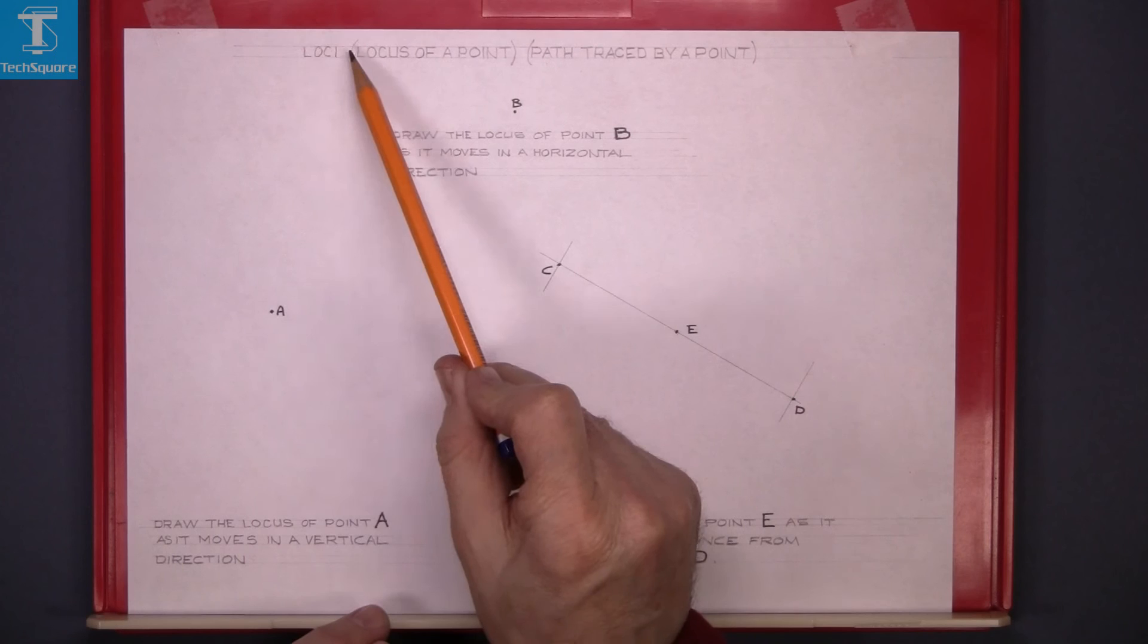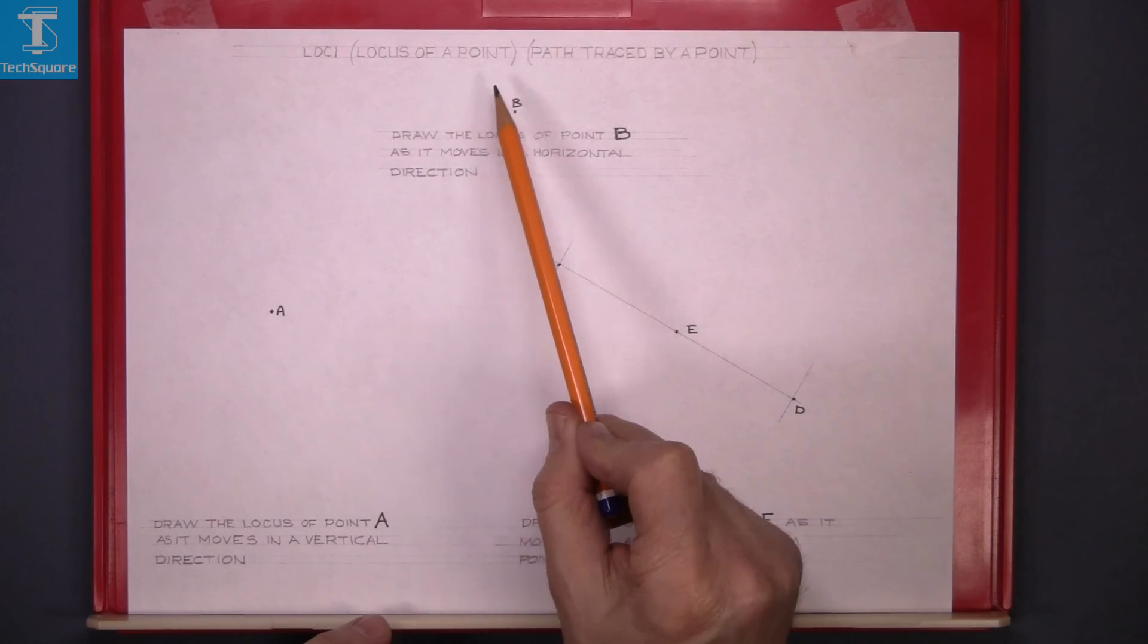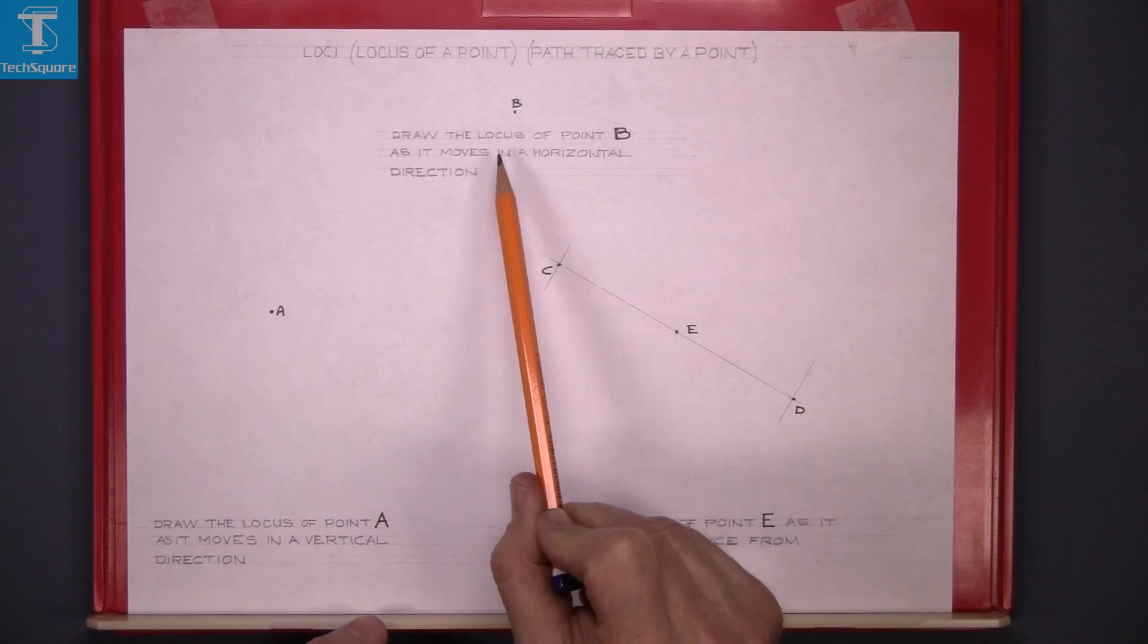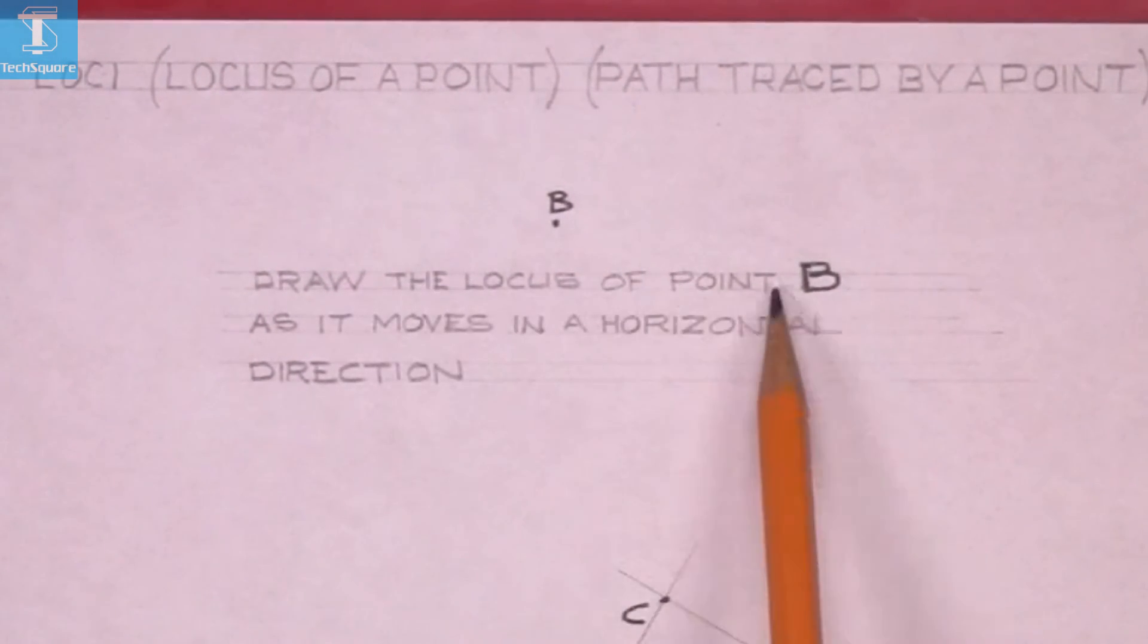This next topic is loci, which means the locus of a point or the path traced by a point. This is the first question here: draw the locus of point B, this is B here, as it moves in a horizontal direction.